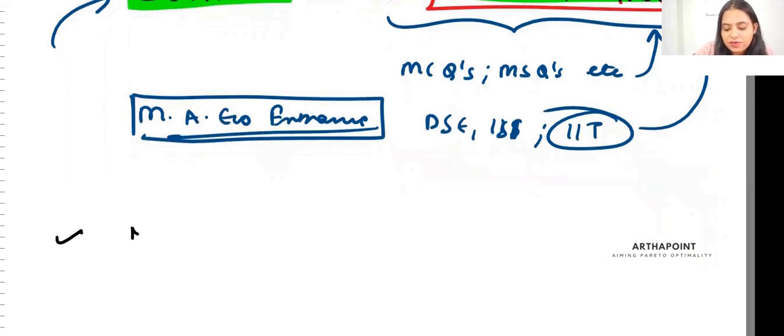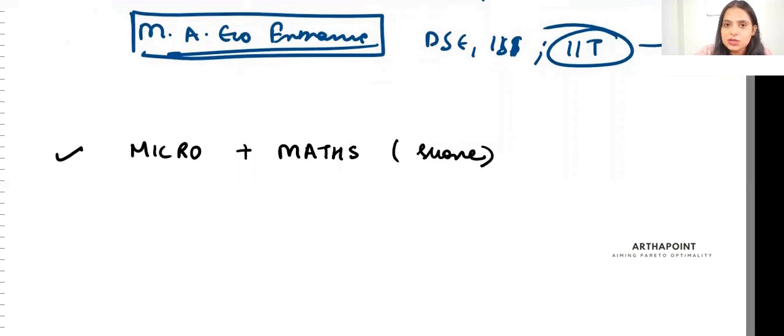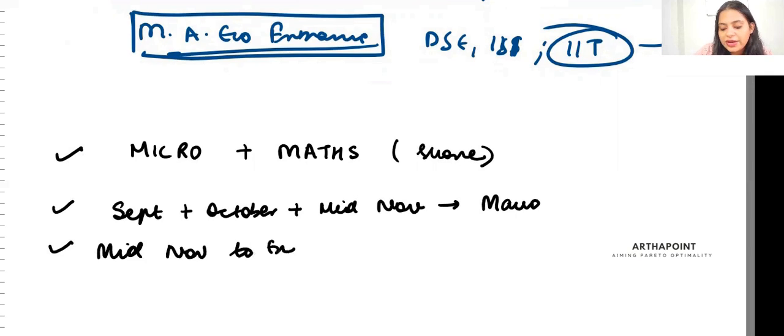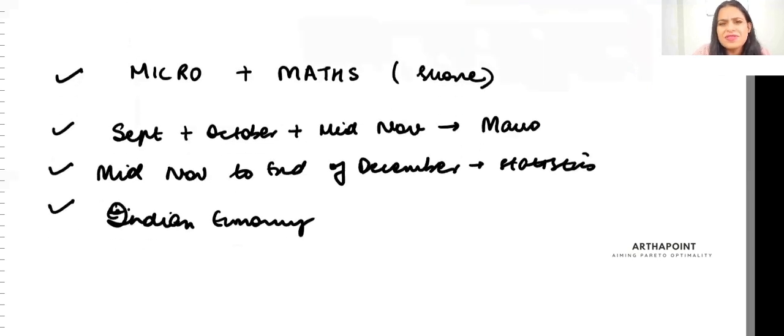By now, you should have covered micro and maths thoroughly. If you haven't covered, I will share what should be done now. Don't worry. But by now, you should have covered micro and maths thoroughly. The aim is to take the month of September and October and mid of November to cover macro thoroughly. Then from mid of November to end of December, we will cover statistics. By this time, you already will have all your videos of Indian economy with you. So you have to go through those 15-20 videos. That's it.